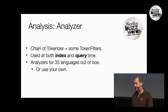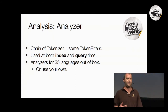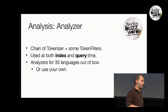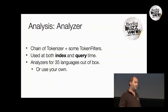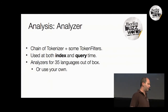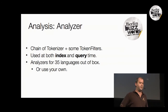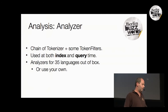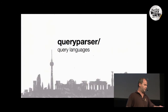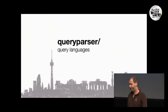We call this list of tokenizers and token filters an analysis chain, and in Lucene we call it the analyzer. This analyzer is used both at index time and at query time — when documents come in we analyze them, and when queries come in we analyze them as if they were documents. For different languages, we have 35 languages supported out of the box in Lucene, which is better internationalization support than previous versions.